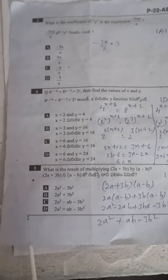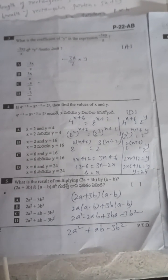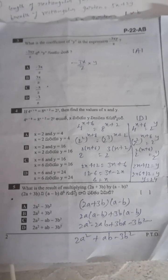Since 4 equals 2 squared and 8 equals 2 cubed, using the formula a power (m into n) equals a power m whole power n, we get 2 power 2(x+6) equals 2 power 3(x+2). Since bases are equal, exponents are equal: 2(x+6) equals 3(x+2), so 2x plus 12 equals 3x plus 6. Solving: x equals 6.